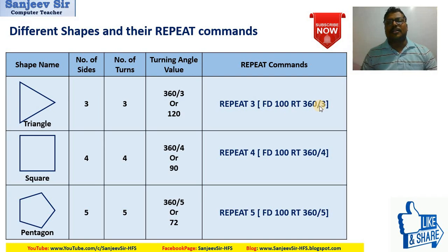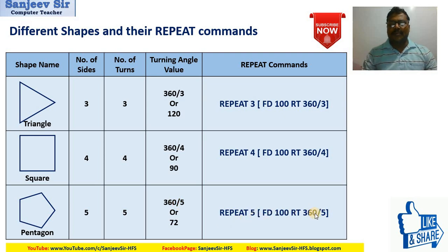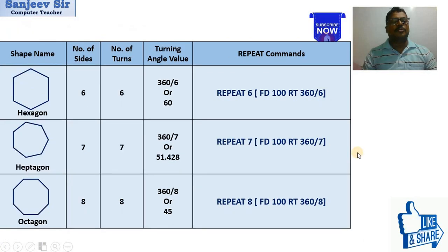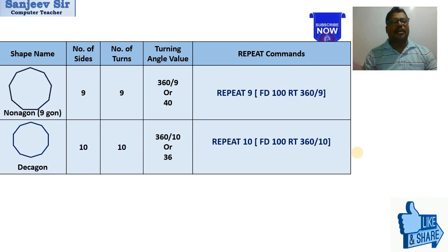The command is FD 100 RT 360/3. Like the same for the square, and for the pentagon with five sides — it turns five times total, so 360 divided by 5, and we write repeat 5 with 360/5. Similarly, we discussed hexagon, heptagon, octagon, nonagon, and decagon in a previous video tutorial.